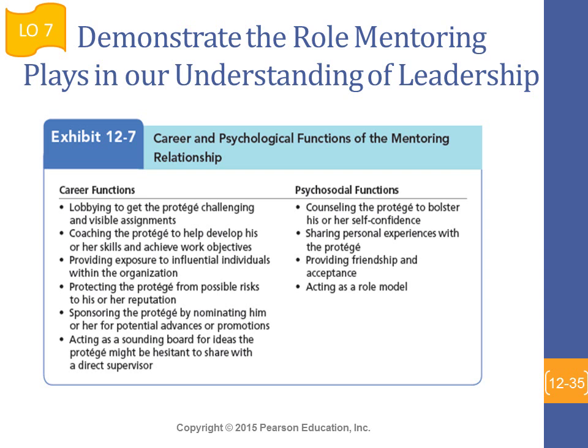Much of an organization's success or failure is due to factors outside the influence of leadership — there are so many other external factors. Not always can leaders do anything about it. In many cases, success and failure of an organization is about being in the right place at the right time or the right place at the wrong time — it can be a matter of luck or many other external factors. That's why the attribution theory of leadership says leadership is merely an attribution people make about other individuals, but that does not mean it can solve everything or ensure a company's success.